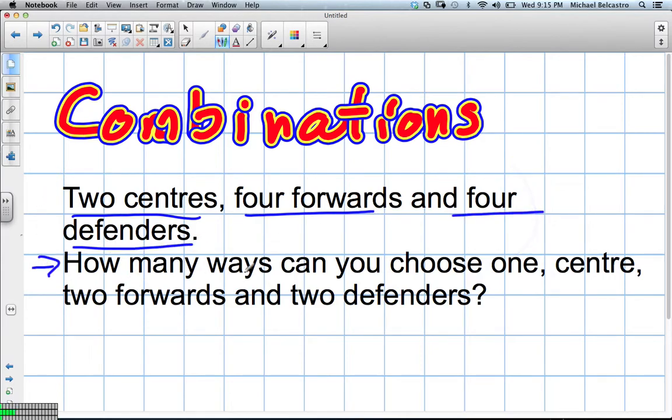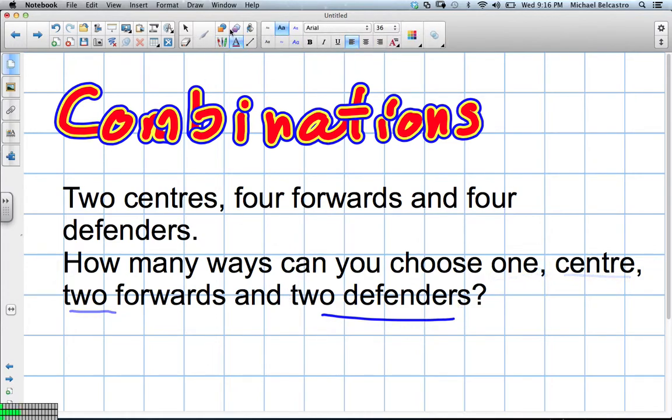And the question asks how many ways can we choose - that comma shouldn't be there - one center, two forwards, and two defenders. Because there's no order to this, we'll try to draw some pictures to help us make sense of this.